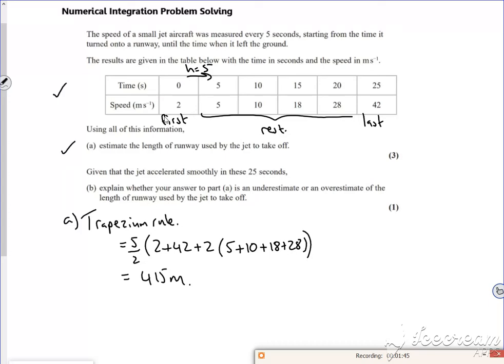Then it says, given that the jet accelerated smoothly in these 25 seconds, explain whether your answer to part A is an underestimation or an overestimation. So I guess if you drew it...